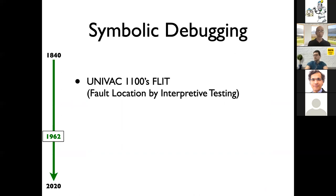What FLIT was doing — it was able to load a core dump. Many of you may be old enough to remember core dumps. When the program was crashing, it was dumping the memory, and FLIT allowed you to load this memory and actually interpret the dump as if you were in a sort of virtual machine, which was very advanced for the time — we're talking about 1962.